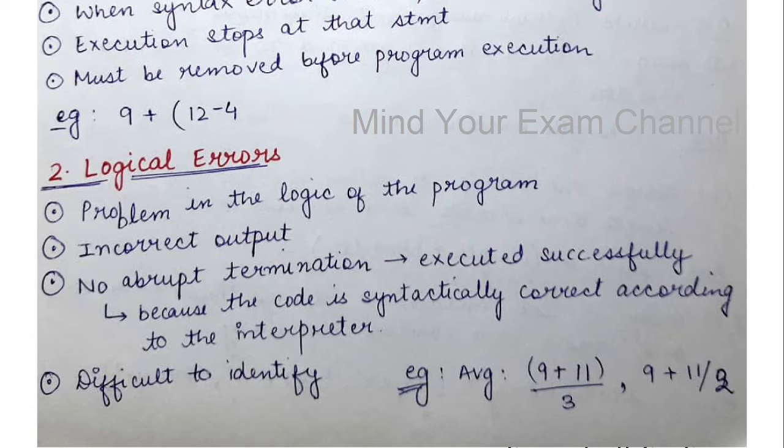The only way you can identify that there may be a logical error in your program is by seeing that the output is not what you expected. Undesired or unexpected output is a clear indication that there is something wrong in the program logic. Incorrect output is the only indication of a logical error.